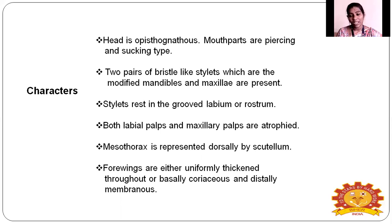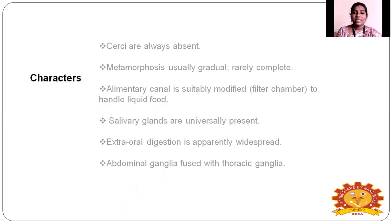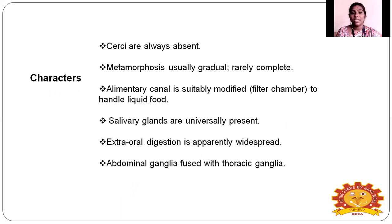Coming to their thorax region: the mesothorax is present dorsally as a scutellum — that triangular shape we saw earlier. About their wings: four wings are either uniformly thickened throughout or coriaceous. In some insects the wings are uniformly sclerotized or leathery, and in the distal part the wing is modified as a membranous wing — that is why it is a half wing.